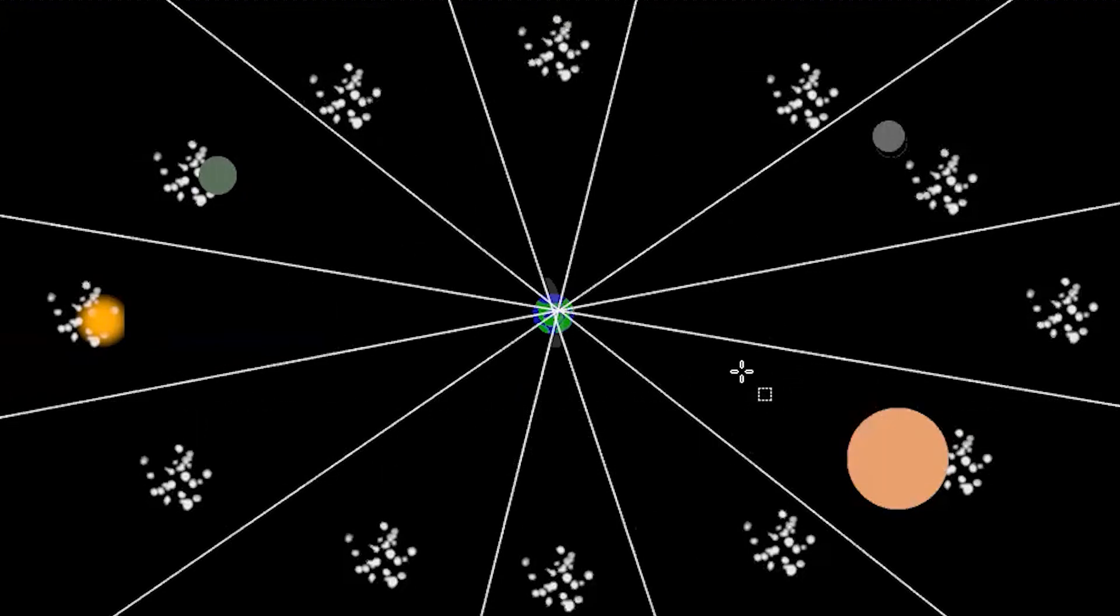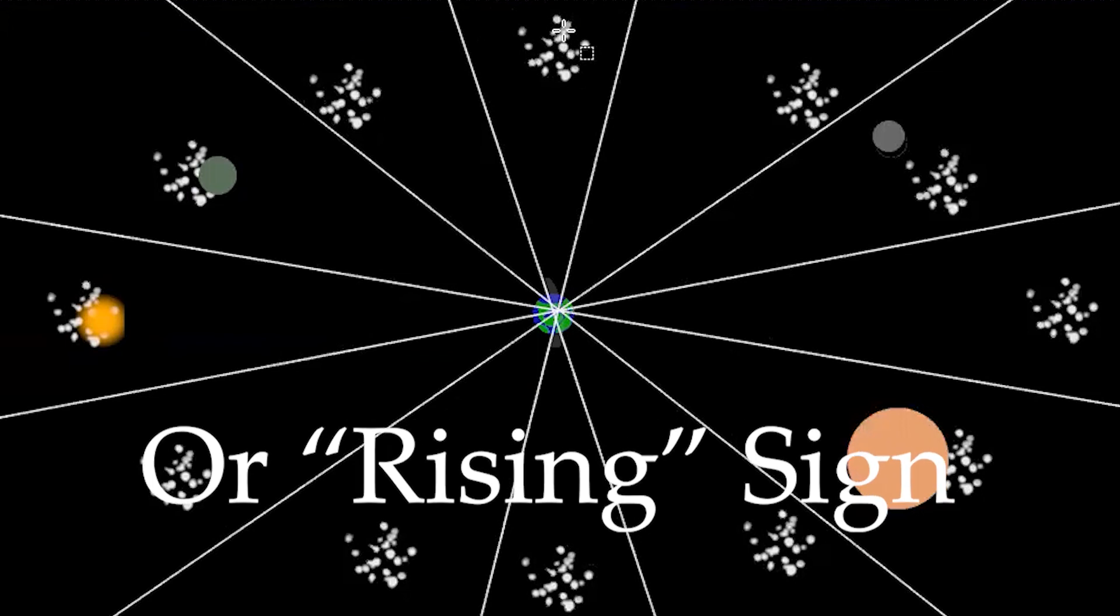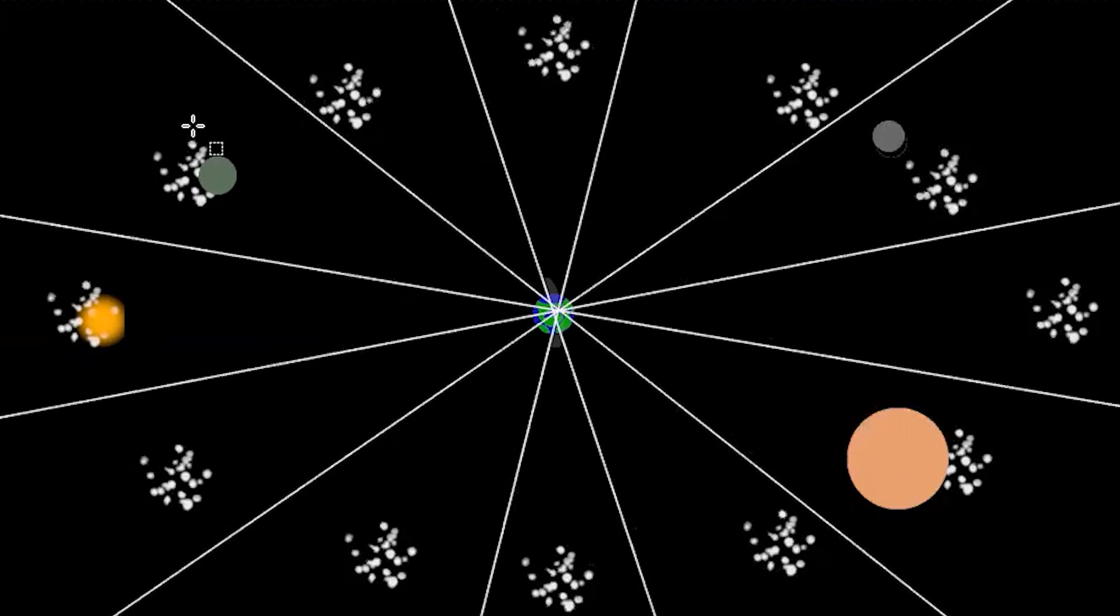But you can imagine a clock, this being one o'clock. Whatever sign is in your one o'clock is called your ascendant. And whatever sign is in your 10 o'clock is called your midheaven.